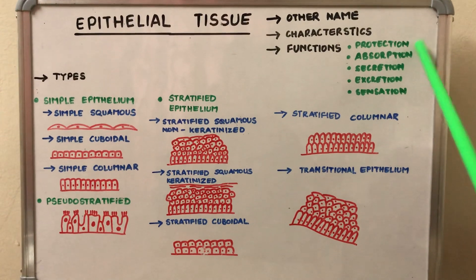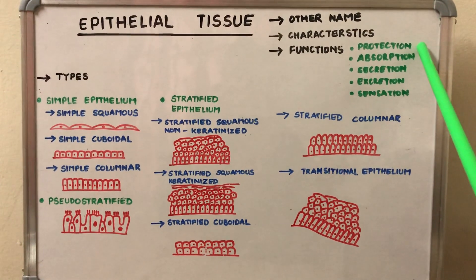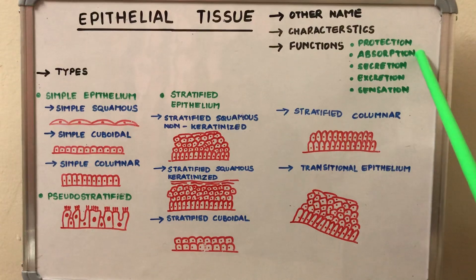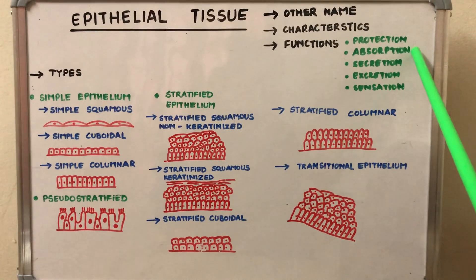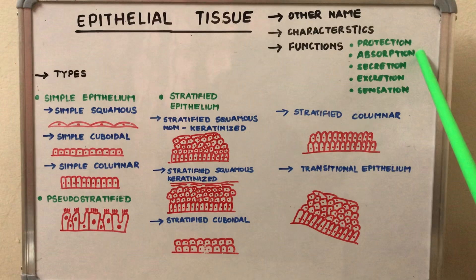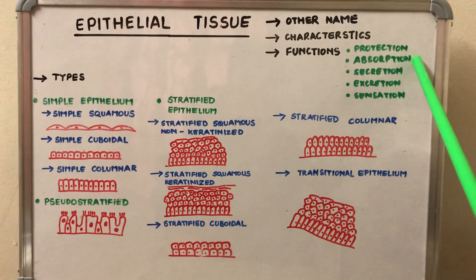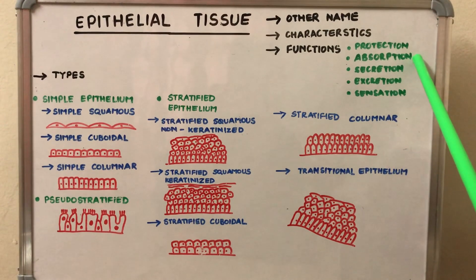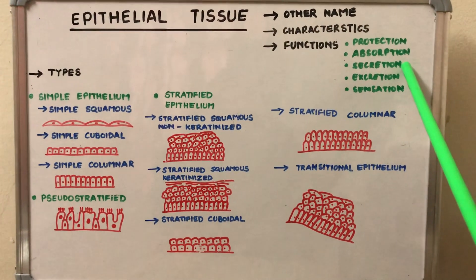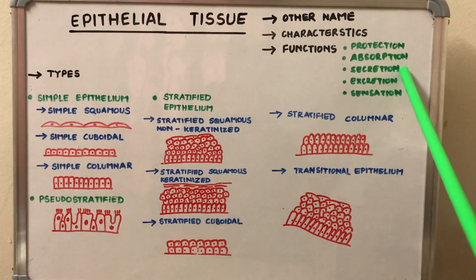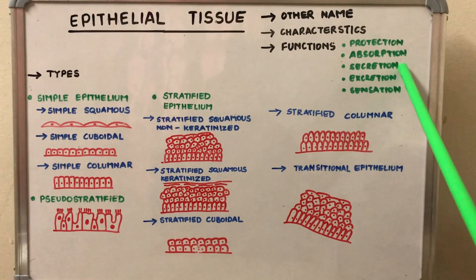It covers the body surface and acts as an interface between the environment and the body; therefore it is protective in nature. For absorption, it lines the body cavities and acts as an absorptive organ. For secretion, it gives rise to glands and ducts and acts as a secretory organ.